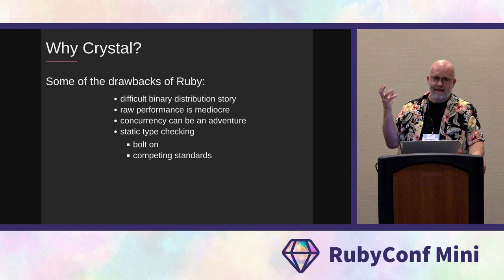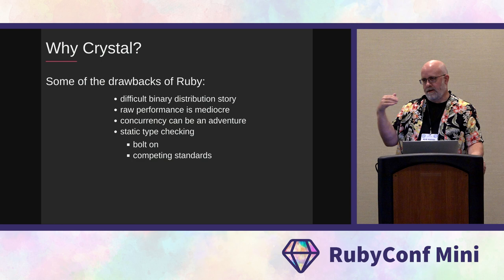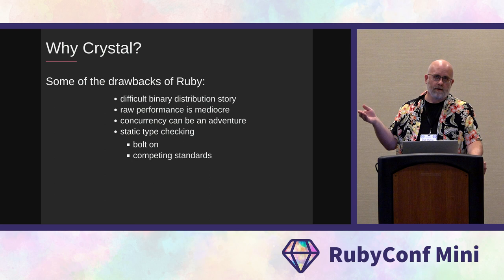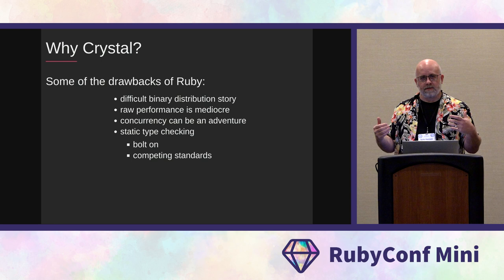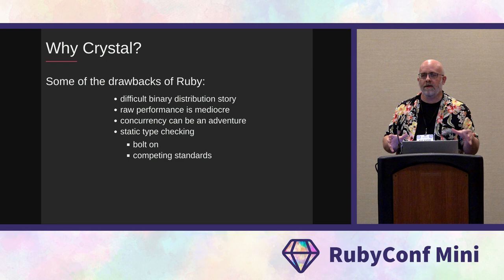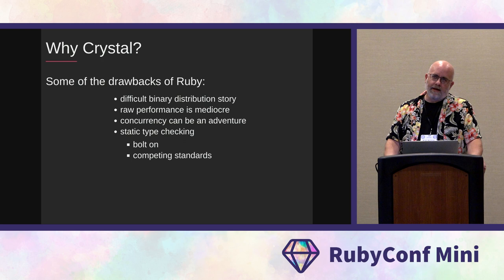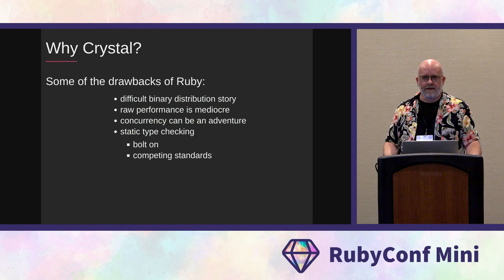Static type checking in Ruby was added in Ruby 3 — arguably a little before that because of the Sorbet project. Ruby 3 also has something called RBS. If you want static type checking so you can be more certain you aren't making type-related errors, you can use it. But it is a bolt-on and it has some limitations. When you're writing code, it's not fluid to use RBS.